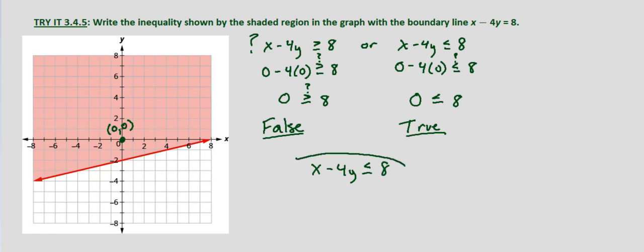We weren't asked to, but if we wanted to put this in slope-intercept form, we'd subtract x from both sides, giving us negative 4y is less than or equal to negative x plus 8. Divide both sides by negative 4, and don't forget to switch the direction of the inequality symbol because we divided by a negative value.